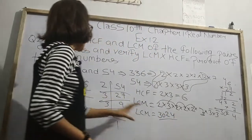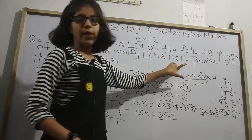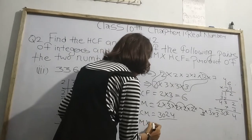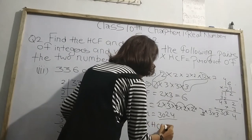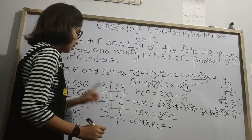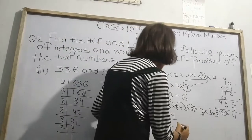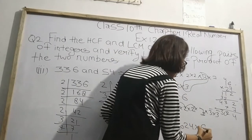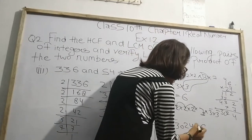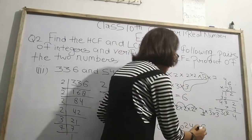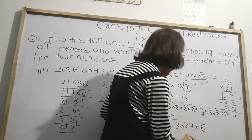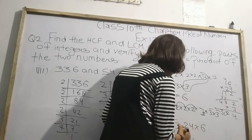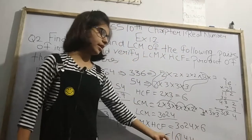Now what we have to do is multiply LCM × HCF. So LCM × HCF = 3024 × 6. Let's multiply: 6 × 4 = 24, carry 2; 6 × 2 = 12 + 2 = 14, carry 1; 6 × 0 = 0 + 1 = 1; 6 × 3 = 18. So we get 18144.